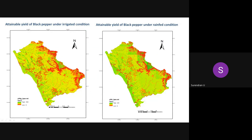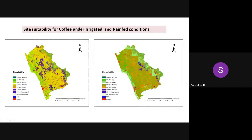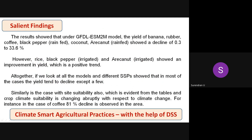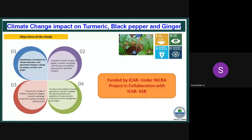We produced yield maps and suitability maps for multiple crops including rubber, rice, coffee, and many others. Most crops showed declining yield in future scenarios. However, with improved management practices, rice, black pepper, and arecanut showed yield improvement, and coconut also showed a positive trend when managed properly. For site suitability, coffee is a good example — almost 80 percent of current coffee growing areas may become unsuitable in future scenarios, making it very sensitive to climate factors.